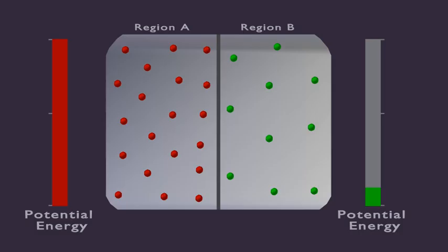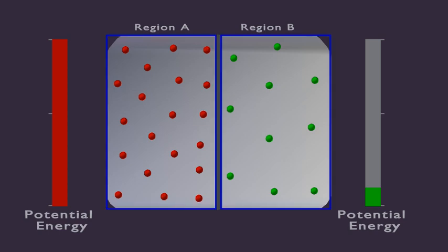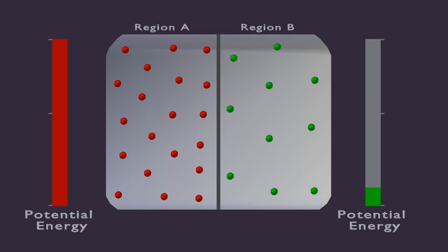Diffusion can be understood in terms of free molecules. Here you have two regions of equal volume. Region A has a greater number of free molecules compared to region B.